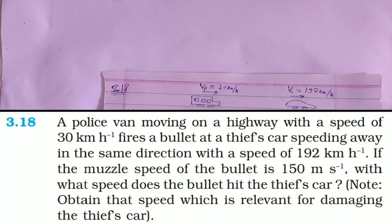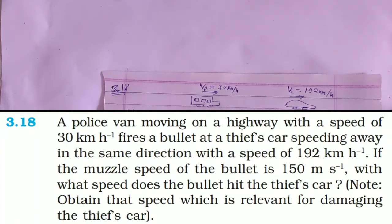NCERT solution chapter 3, motion in a straight line, question number 18. A police van moving on a highway with a speed of 30 km per hour fires a bullet at a thief car speeding away in the same direction with a speed of 192 km per hour. If the muzzle speed of the bullet is 150 meter per second, with what speed does the bullet hit the thief's car?